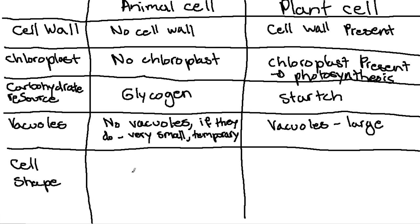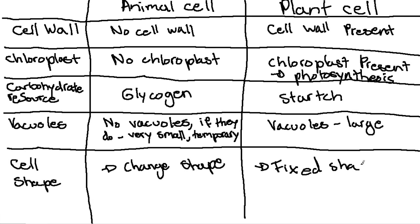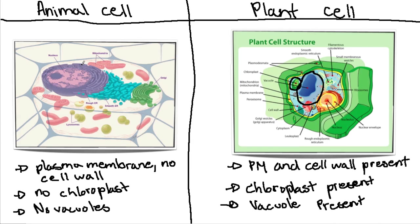Finally, cell shape. Because animal cells lack a cell wall, they can change shape. Plant cells, however, have a cell wall, so they have a fixed shape. Looking at our drawings, animal cells are rounded and irregular in shape, whereas plant cells are very regular — box-like structures — and they can't change their shape at all.